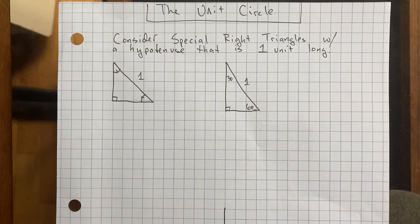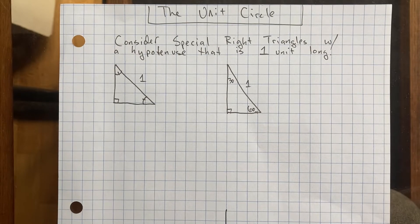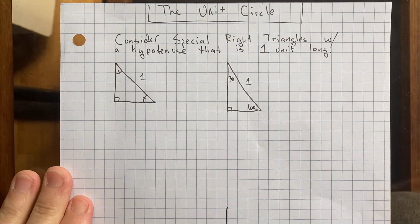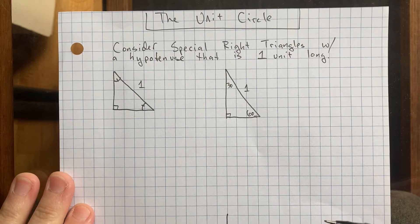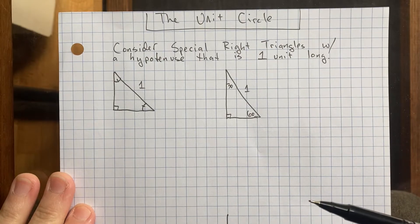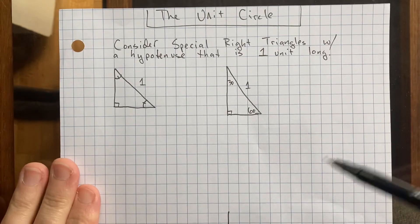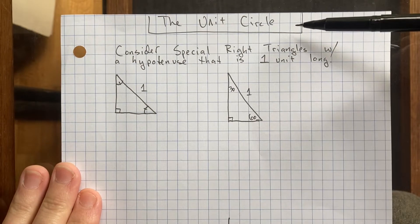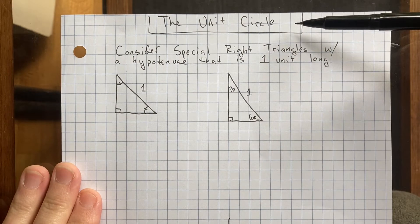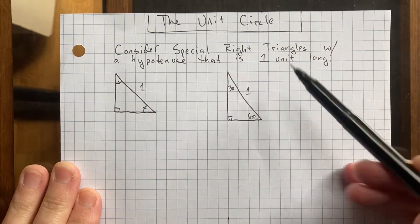This week we're going to spend the last week of geometry thinking about one topic that relates to Algebra 2. We're going to try to take trigonometry and make functions out of it. We're not going to do that today, but in order to understand that, you need to learn about the unit circle. And to start understanding that, let's review some special right triangles.